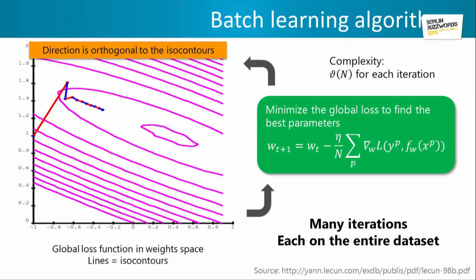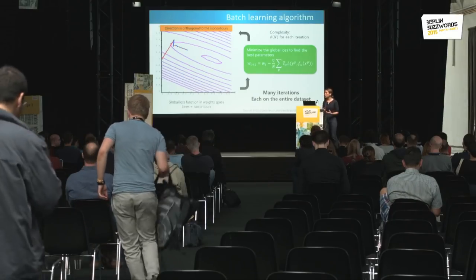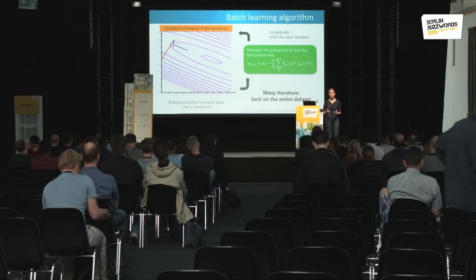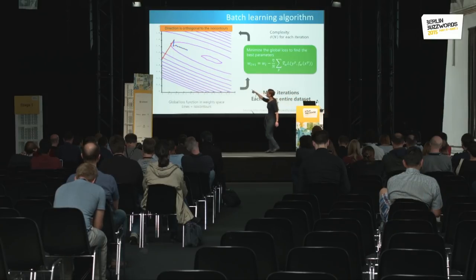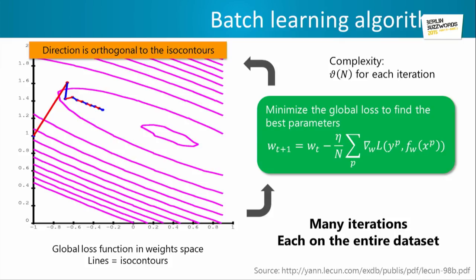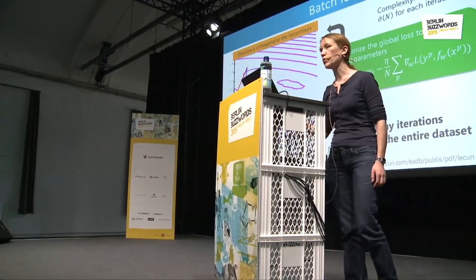To give you a picture: this is the parameter space — you have two weights here, but you may have a higher-dimensional space. For each iteration, you're trying to find the direction that brings you to the minimum of the loss function. You start at some point with initialized weights, and you can't go straight to the minimum, so you do many iterations one after the other, each time with complexity O(n), going bit by bit down the slope of your loss function. This is really expensive.